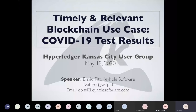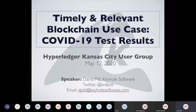Thanks everyone for joining. This is something we've been working on for a while. Hyperledger Fabric is a framework that we've been building competencies in for a couple of years now, and we're always trying to evangelize blockchain use cases in general. The framework we have the most experience with is Fabric. Today, I'd like to present the blockchain implementation that helps track test results. We originally built this for general viruses like influenza, because we thought it was a good use case, and we've adapted it for COVID. So we actually handle tracking of both types — really, it can be any kind of virus.